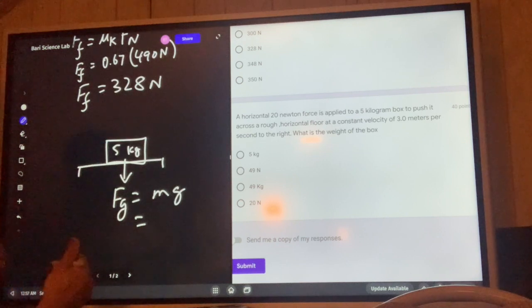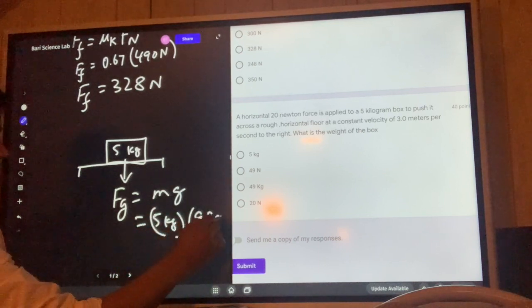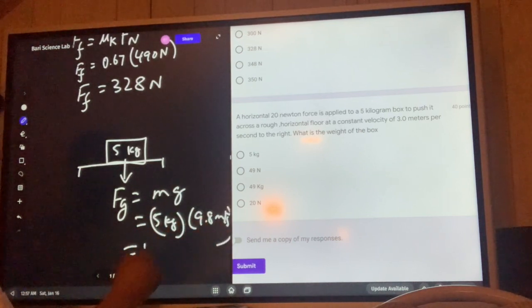It's very easy to find the weight. 5 kilograms times 9.8 meters per second squared equals 49 newtons.